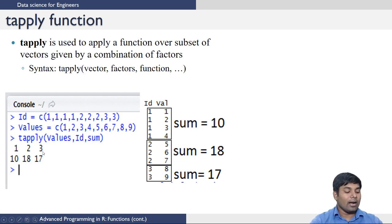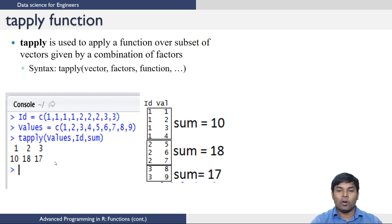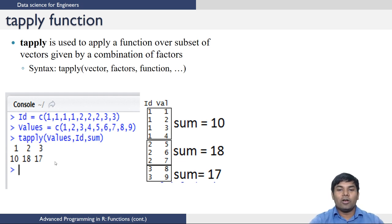In this lecture we have seen how to write functions that take multiple inputs and return multiple outputs. We have seen inline functions, and we have also seen functions useful for looping over objects. In the next lecture we are going to discuss control structures in R. Thank you.